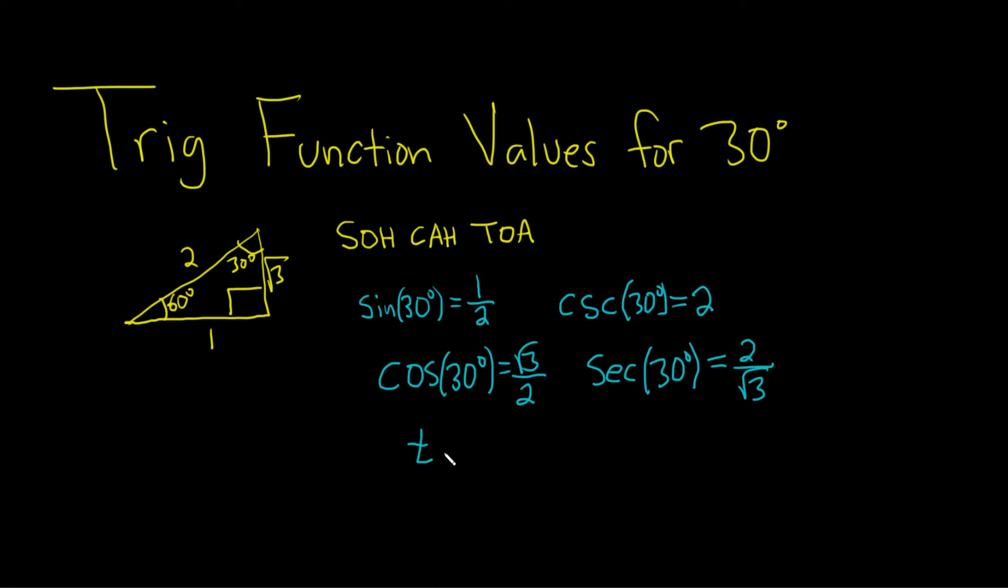And now we can do tangent of 30 degrees. Tangent is opposite over adjacent. So opposite from 30 degrees is 1, and adjacent is square root of 3.